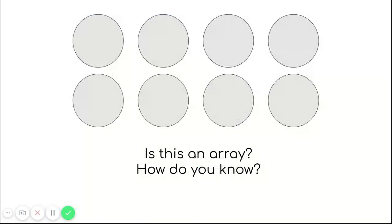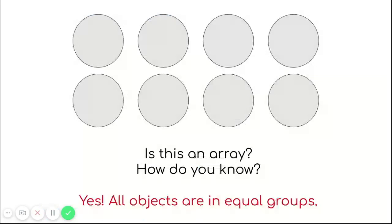We're going to practice looking at a couple of pictures and deciding if it's an array. This is our first picture and it looks just like the one we just saw. Is this an array, and how do you know? Take a minute to think about your answer and either write it down or tell someone at home. This is an array because all of the objects are in equal groups and we have no extras left over.